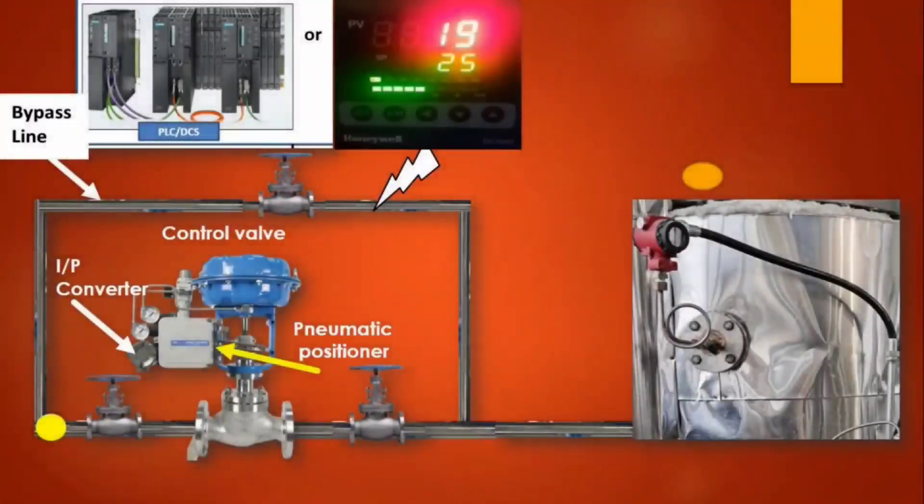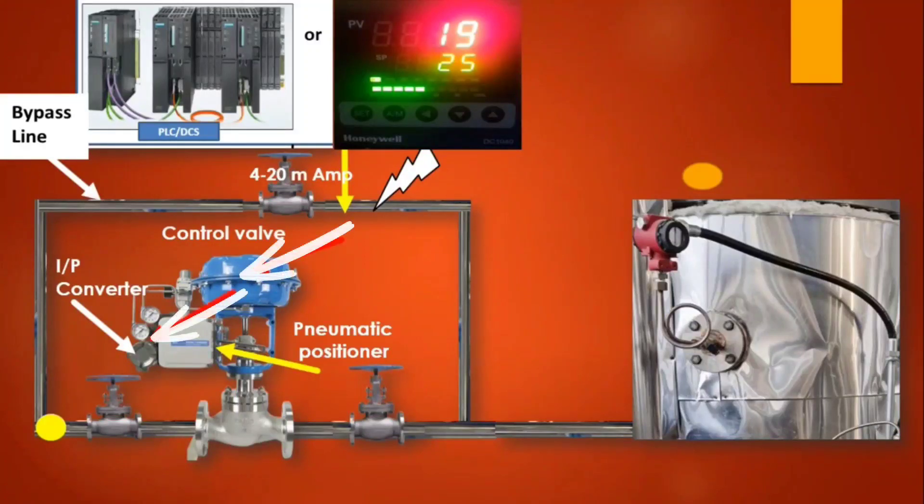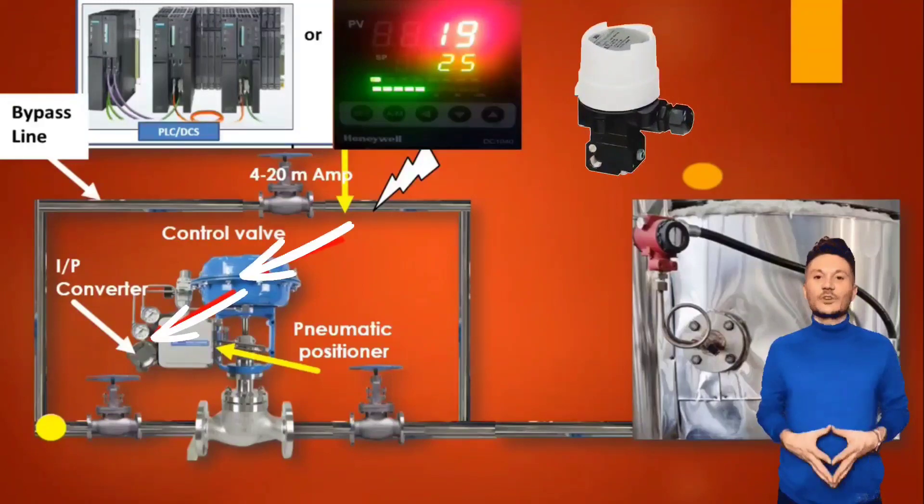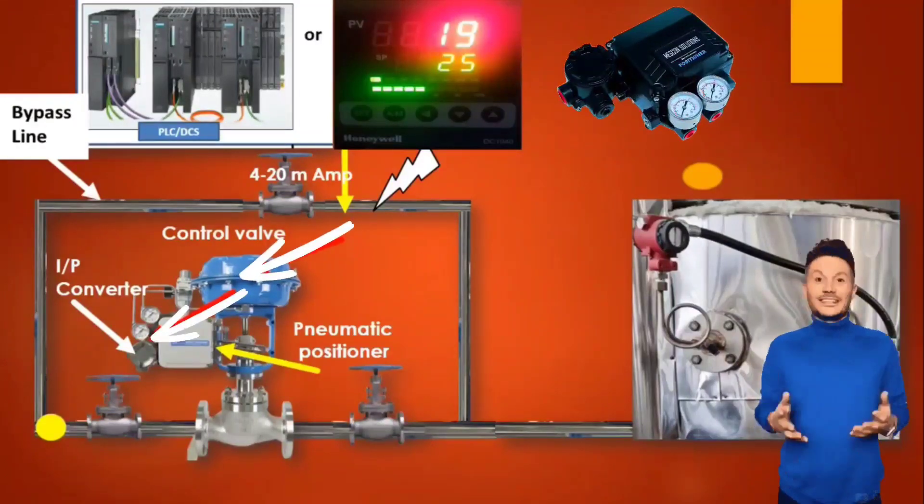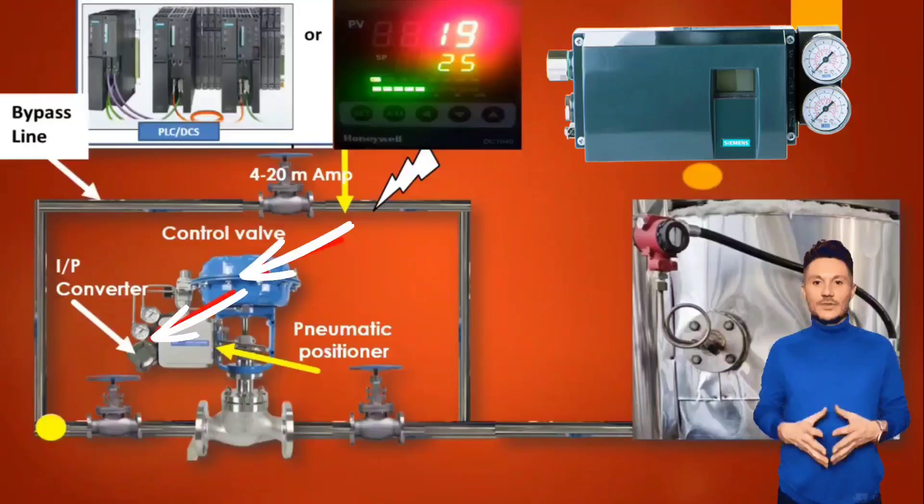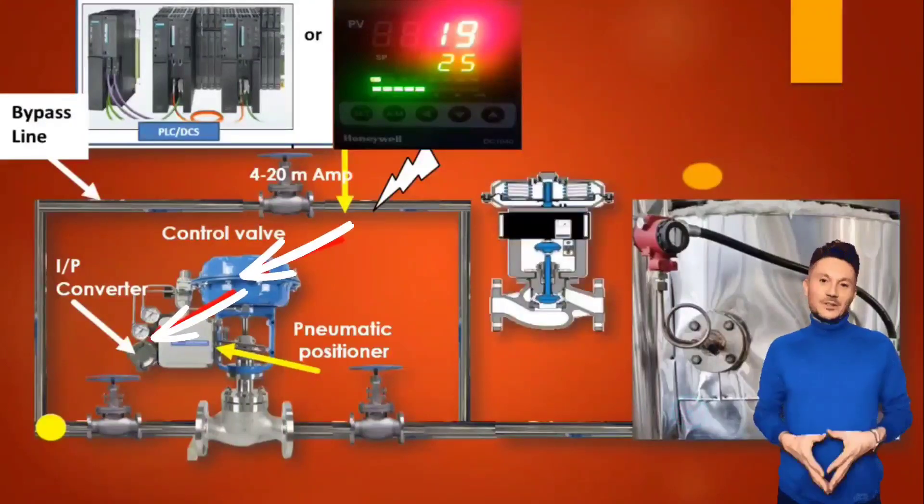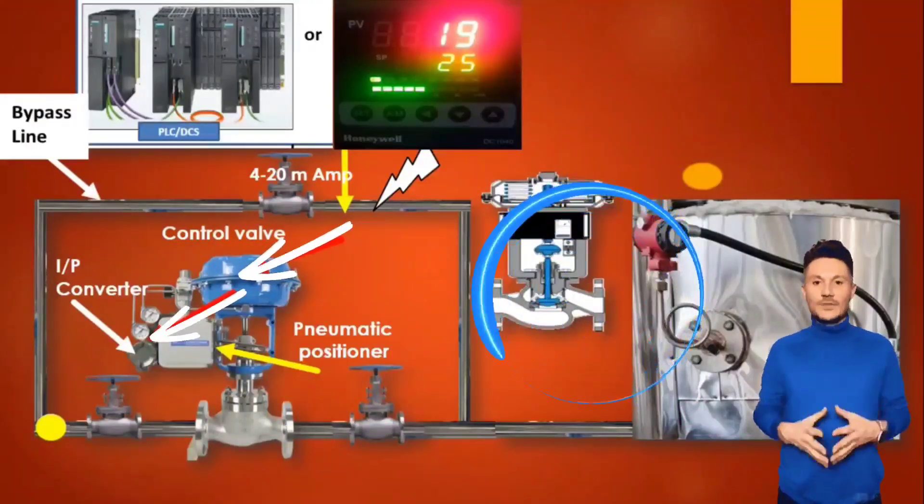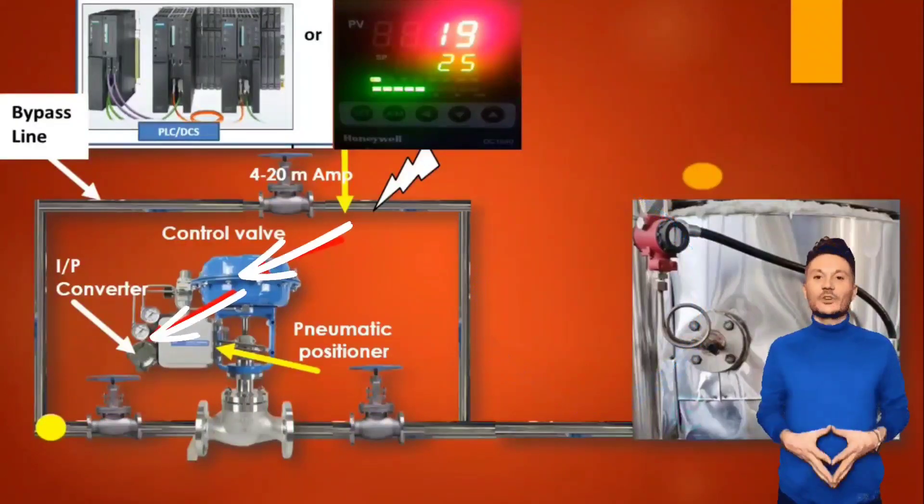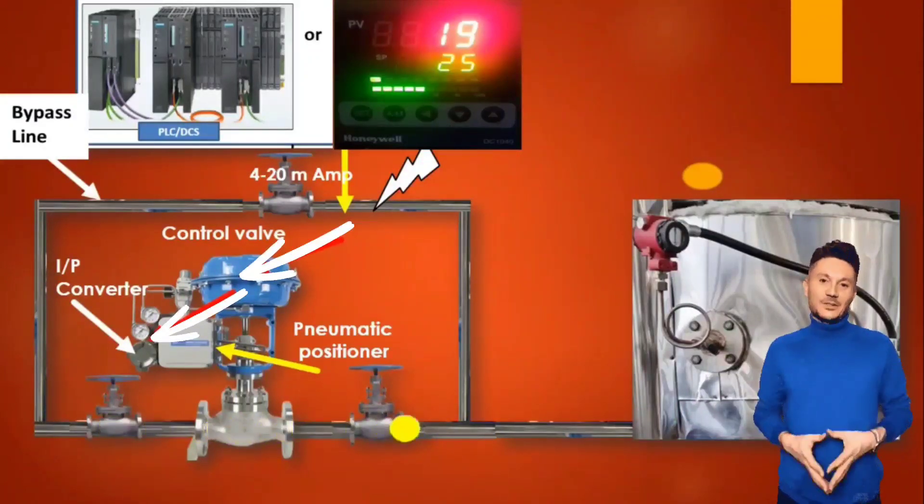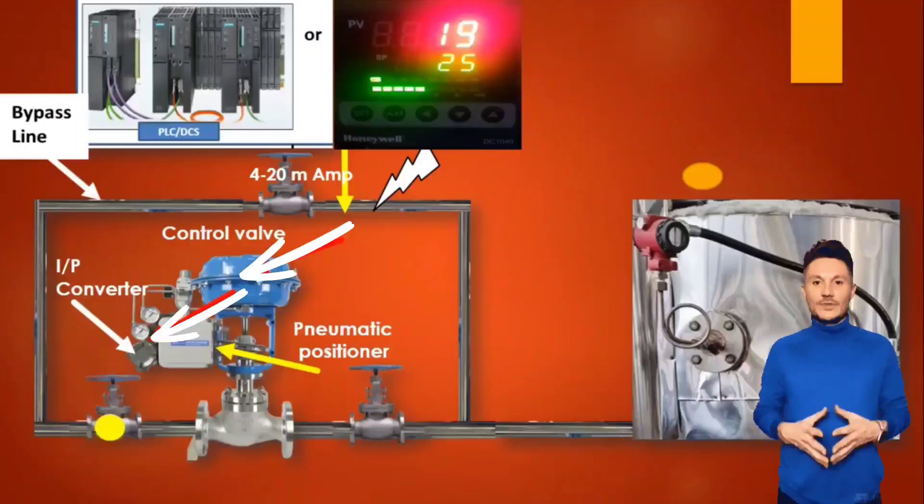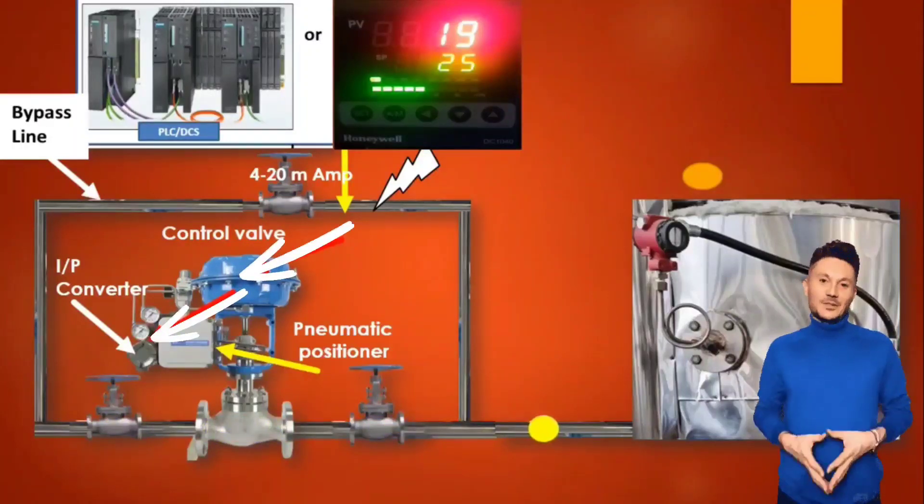Look friends, from any controller 4 to 20 mA signal is sent to the control valve positioner. This positioner can be I to P converter, electro-pneumatic positioner, or smart positioner. After this, the control valve operates according to that signal. When the control valve opens, the flow passes through that pipeline. Due to which any level, temperature, pressure, flow - these are controlled.